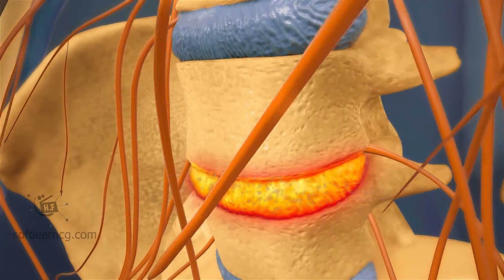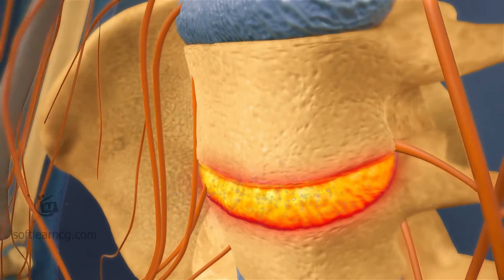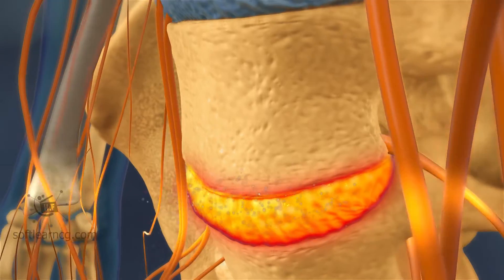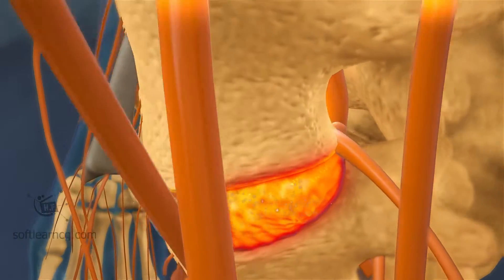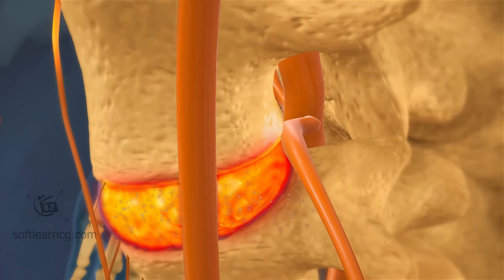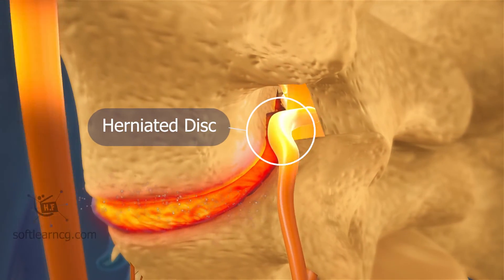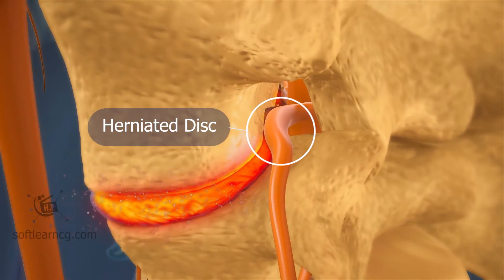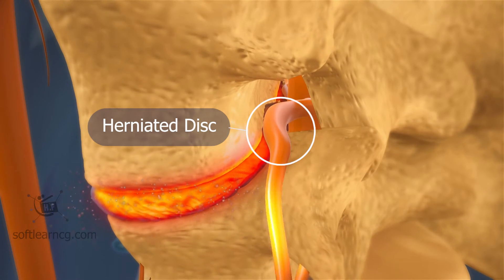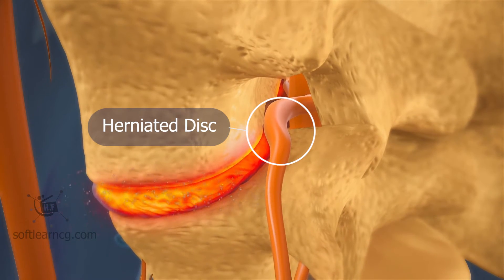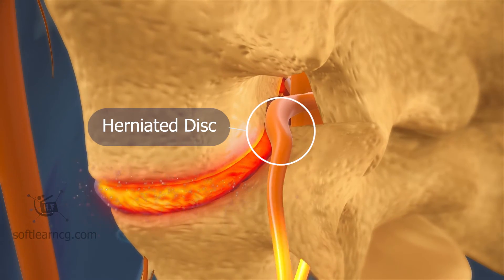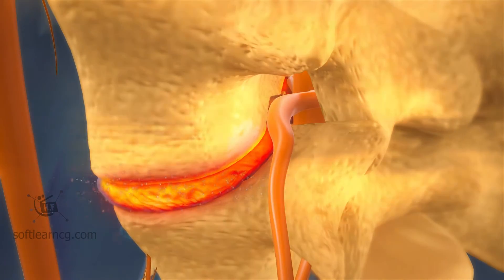The majority of herniated discs occur in the lumbar region of the spine. Any contact between the nerves and inflammatory proteins present in the disc's nucleus, or pressure from the disc itself on nerves in the lower spine, can result in pain, numbness, tingling, or weakness radiating down the leg.